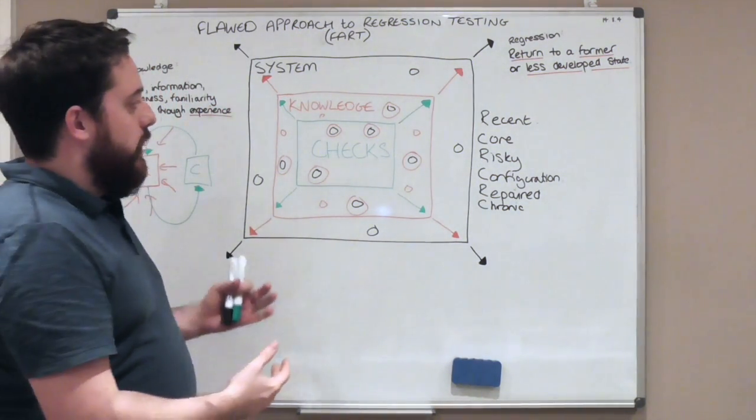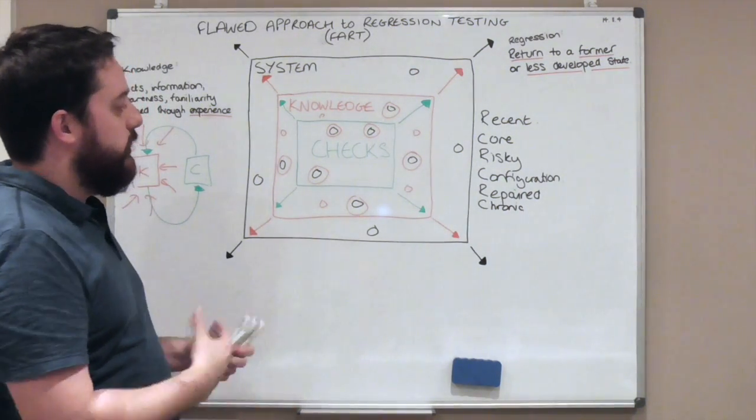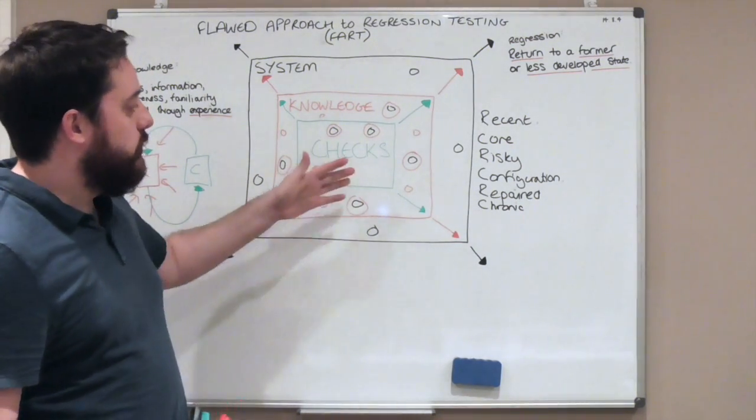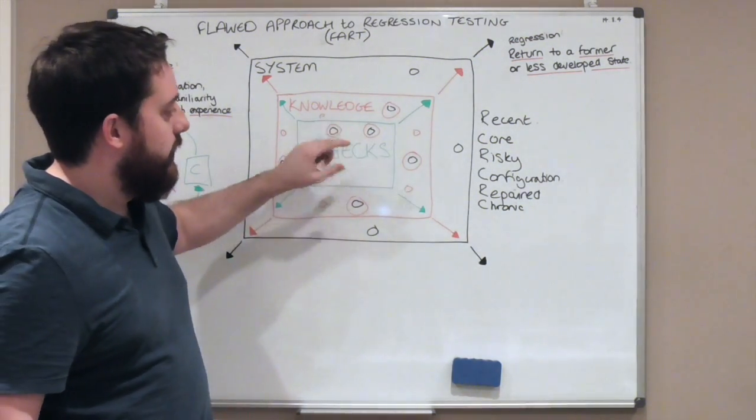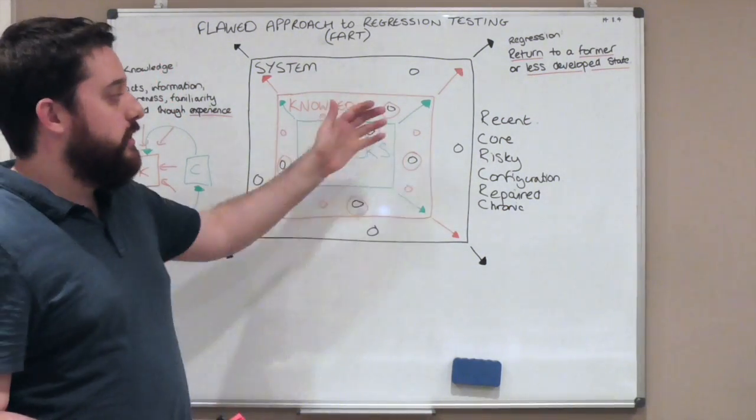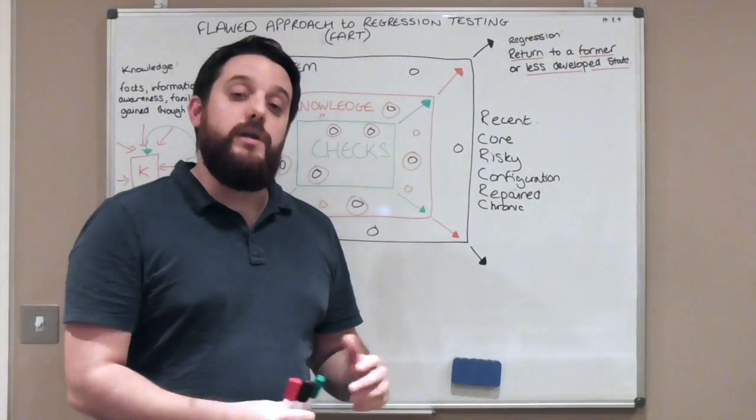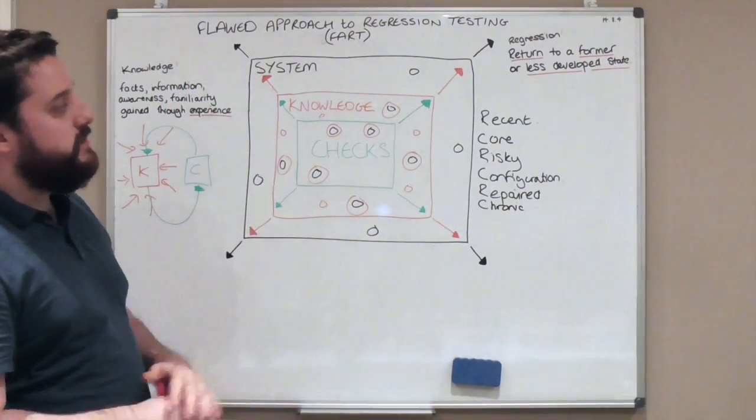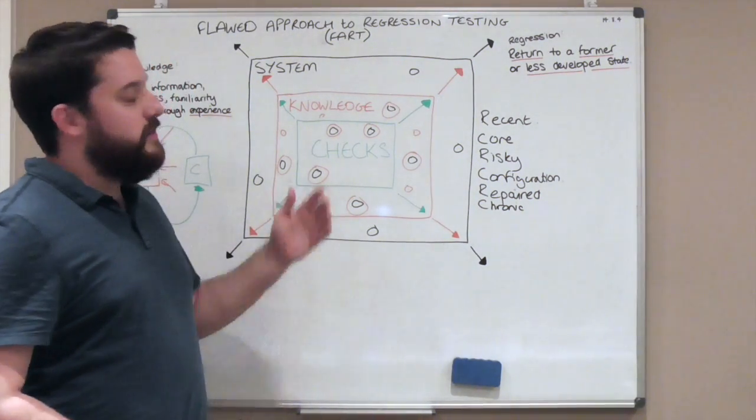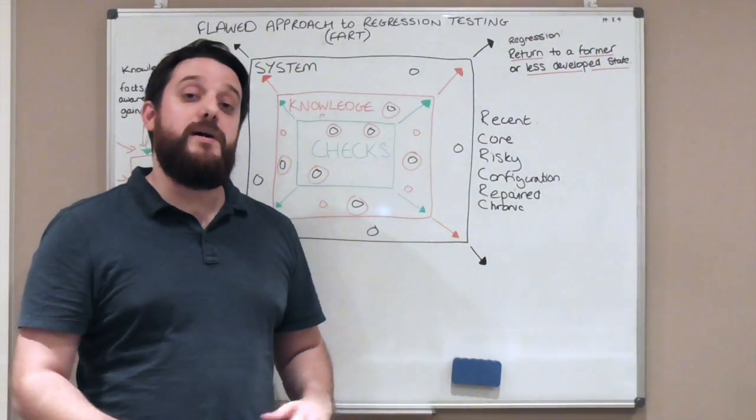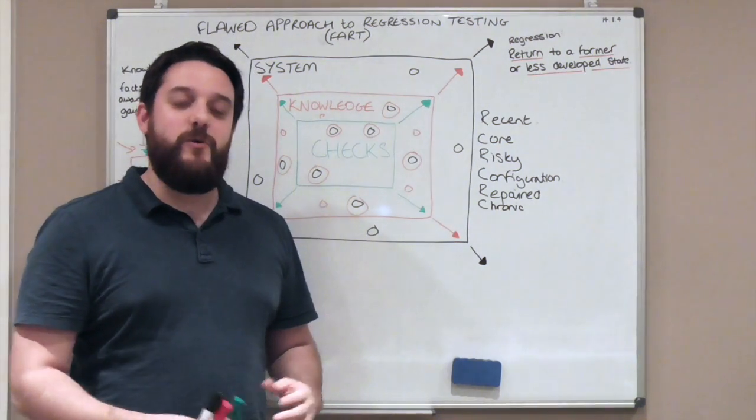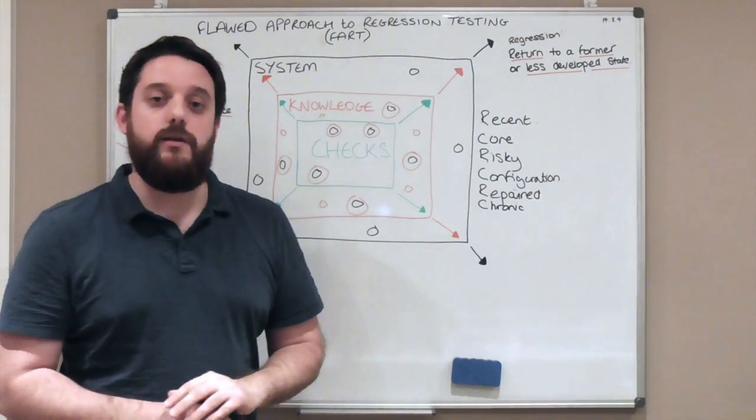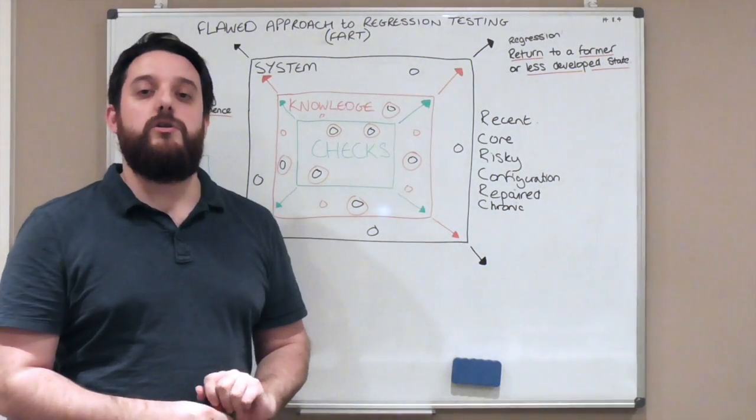This is what I'm trying to get at when I'm saying that if your approach is 100% automation, this is why I believe it's flawed. You're always gaining knowledge and we always need to introduce it to these checks. If you're so obsessed with trying to automate regression testing, trying to make that check box as big as your knowledge box, you're never going to gain any more knowledge and you're not going to learn anything new. This is my stance. This is my model. This is FART.